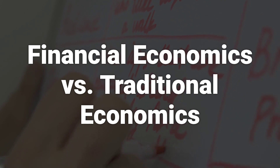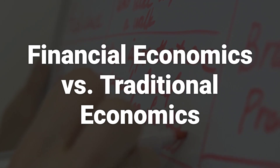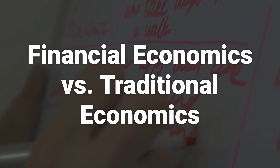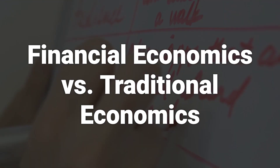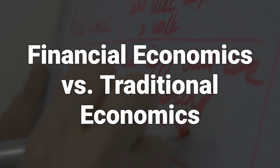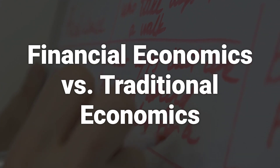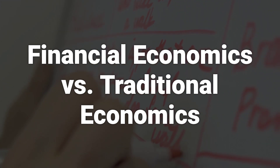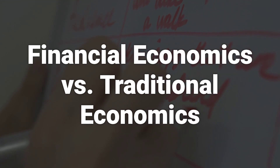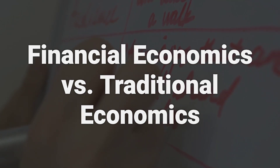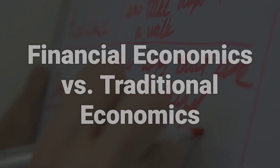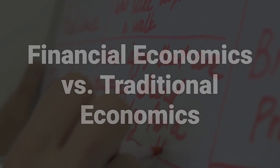Traditional economics focuses on exchanges in which money is one, but only one, of the items traded. In contrast, financial economics concentrates on exchanges in which money of one type or another is likely to appear on both sides of a trade. The financial economist can be distinguished from traditional economists by their focus on monetary activities in which time, uncertainty, options, and information play roles.